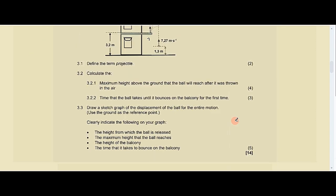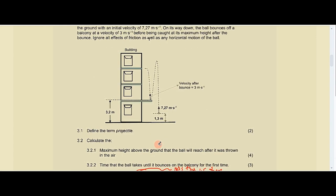Question 3.3 says draw a sketch graph of the displacement of the ball for the entire motion, using the ground as the reference point — so the x-axis represents the ground. Clearly indicate the following on your graph, worth five marks: the height from which the ball is released, the maximum height, the height of the balcony, the time to the first bounce, and the correct shape of the graph. This is a position versus time graph.